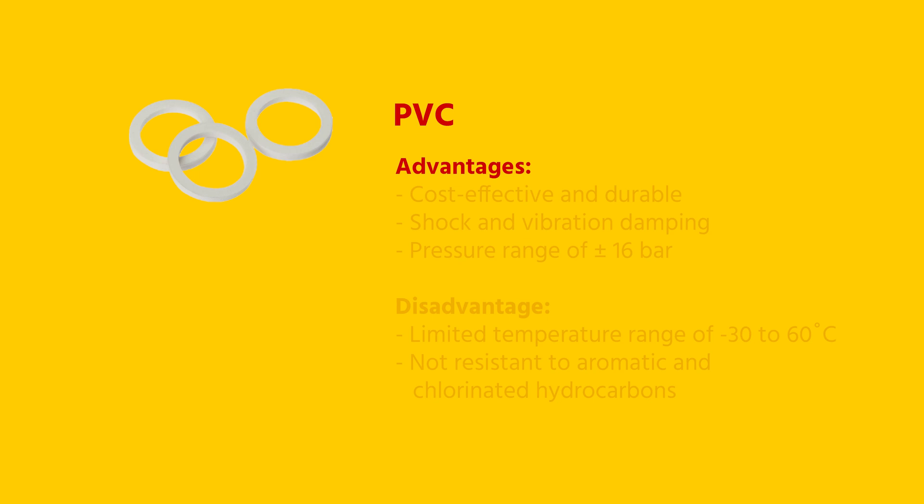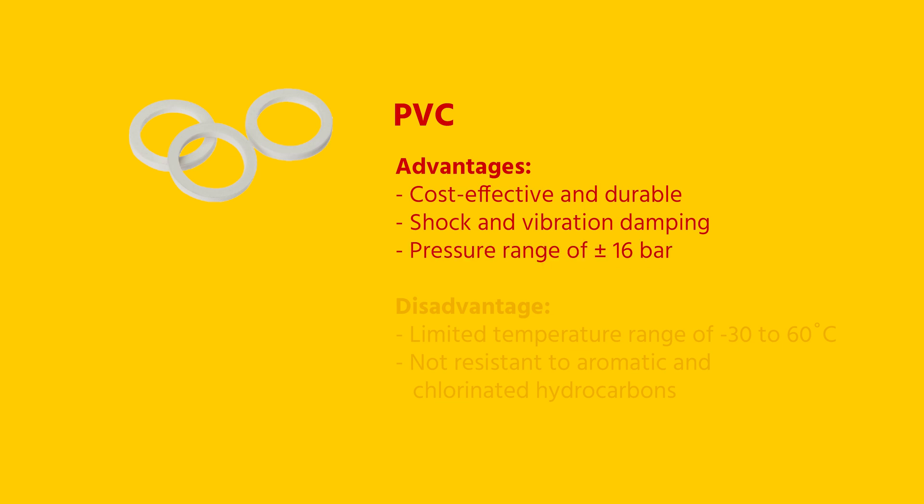To help you choose, I will briefly list the advantages and disadvantages of each material type. PVC is a cost-effective and durable material, with excellent shock and vibration damping properties. It has a pressure range up to about 16 bar, making it widely used, including for vacuum applications.